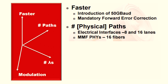One can add more physical paths — more copper traces or more optical fibers. For example, we have eight-lane versions based on 50 gig and 16-lane versions based on 25 gig to achieve 400 gig signaling across an electrical interface.